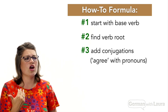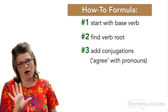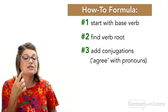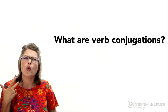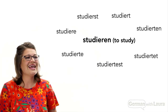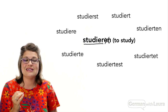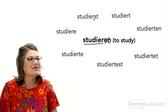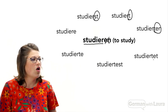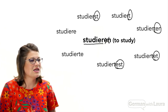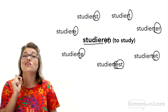We're now at the final step: add on conjugations, which have to agree with pronouns. There are multiple sub-steps to completing step three. The first question is simply: what are verb conjugations? Returning to studieren — take the '-en' off the infinitive to get the stem, and what you see on the end of all those roots are two, three, or four letter changes called conjugations.